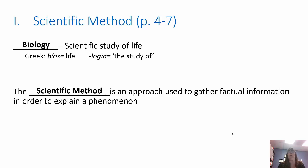The scientific method is how we gather factual information to explain phenomena. It's very important because that is how we validate research. If you're going to do research, you need to write everything down, take careful notes, and be very accurate, because your experiment has to be repeatable. I have to be able to take your experiment, do the same thing you did, and get the exact same results.